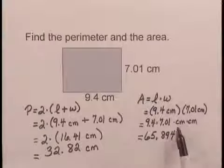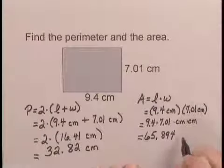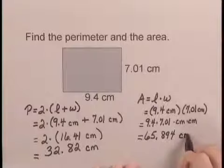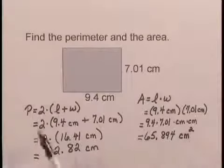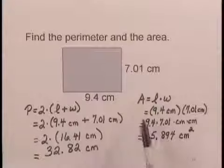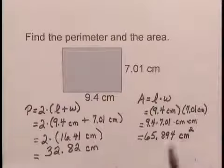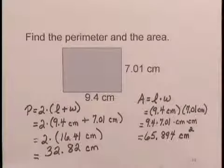Now since we have centimeters times centimeters, we write as our units, square centimeters. Note the difference between the units for perimeter, which is centimeters, and area, which is square centimeters. So we have found the perimeter and the area of the rectangle.